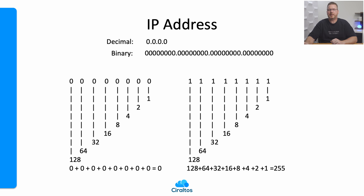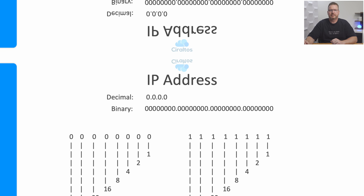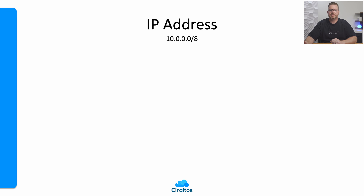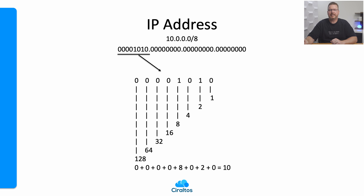255 has a special meaning we'll review shortly. Let's look at the Class A 10.0.0.0 private IP range. To get the value of 10 at the first octet, we need to identify what bits need to be enabled that add up to 10. If we enable the 2 and the 8 position and add them together, we get 10. The screen shows the binary equivalent of 10. The last three octets for this IP are all zero.